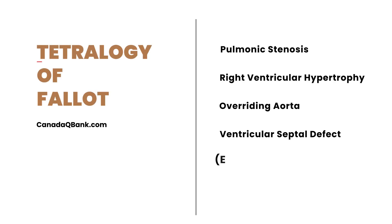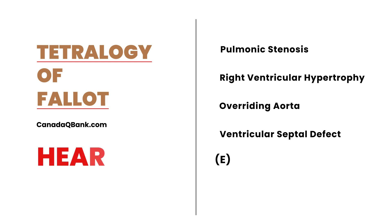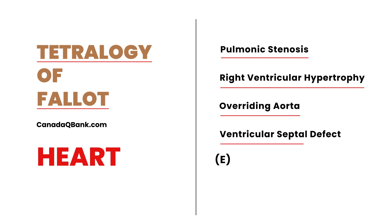Tetralogy of Fallot is the topic for this video. Tetralogy refers to four things that happen in the heart. These four things are: pulmonic stenosis, right ventricular hypertrophy, overriding aorta, and ventricular septal defect. There's a mnemonic here — PROVE.